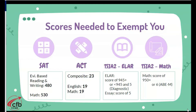If you don't meet any of those standards, that's where the TSI comes into play. You would need at least a 945 or higher on the English section and an essay score of at least a 5. If you do not meet that, you'll get a second opportunity with the diagnostic. If you get at least a 5 on the diagnostic, you can still show college readiness scores. For the math section, you need at least a 950. If you do not have a score of at least 950, you would be given a diagnostic, and a score of at least a 6 or higher will give you the college readiness scores.